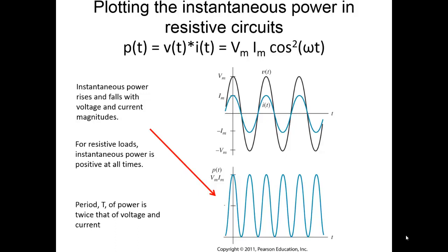If we plot out the power, in the upper graph we have the voltage and the current, both shown for this resistive circuit. We know that they're in phase, and so the instantaneous power is plotted here as Vm times Im times the cosine squared of omega T. The period of the power is twice the period of each individual voltage or current. The instantaneous power for resistive circuits is all positive — no negative values. Cosine squared gives us all positive values.